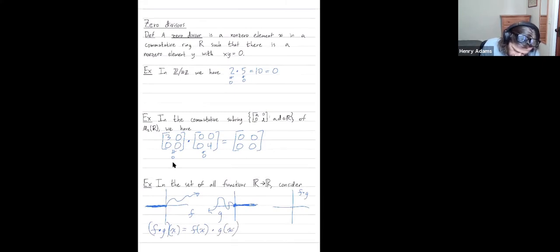So if my input is non-positive, then f of x is zero, so I'm going to get zero. And if my input x is non-negative, well, then g of x is zero, so I'm going to get zero coming from that term.